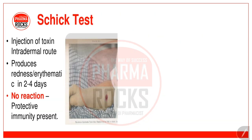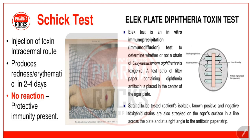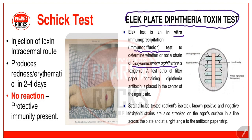The Schick test is performed by injection of toxin via intradermal route — it produces redness and erythema. No reaction indicates protective immunity is present in the body. The Elek test is an in vitro immunoprecipitation / immunodiffusion test for Corynebacterium diphtheriae. Both tests are performed for identification of diphtheria.